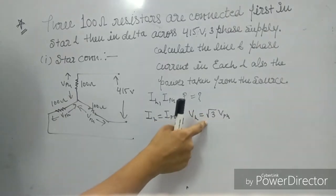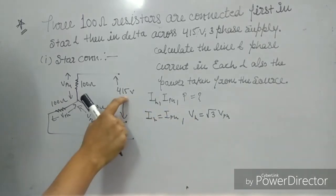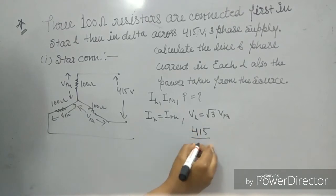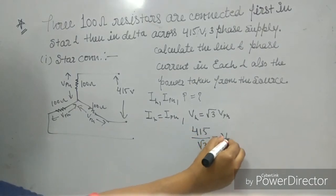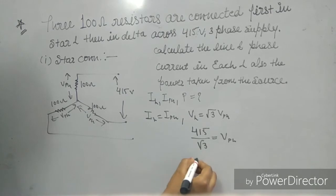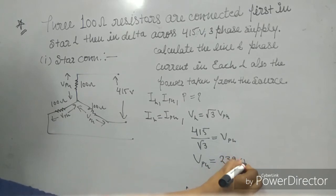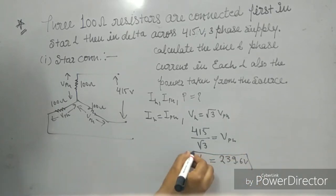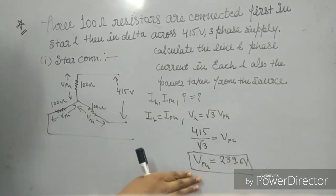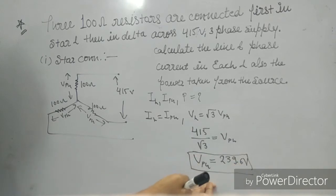In star connection, line current equals phase current, and line voltage relates to phase voltage. Line voltage given is 415 volts, so phase voltage VPH equals 415 divided by root 3, which gives us 239.6 volts.